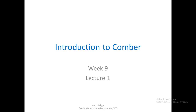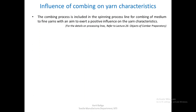Hello, today we shall see an introduction to Comber and let us see the influence of combing on yarn characteristics. The combing process is included in the spinning process line for combing of medium to fine yarns, with an aim to exert a positive influence on yarn characteristics. For details of the processing line, please refer to lecture 26, which covers objects of Comber preparatory.